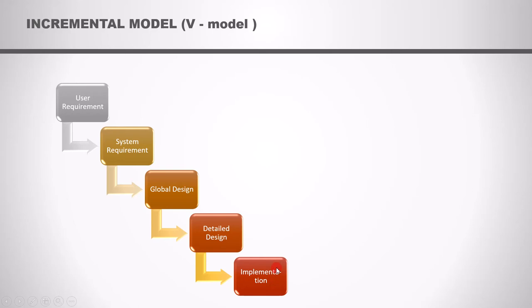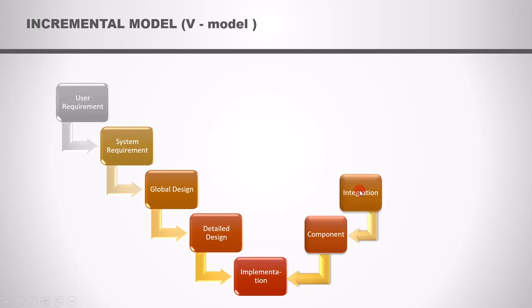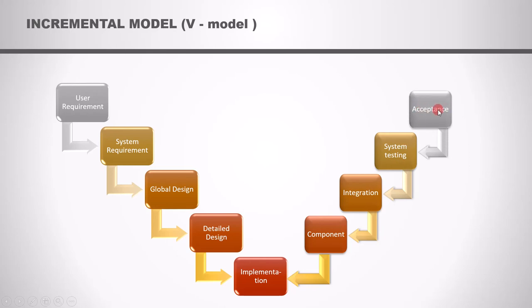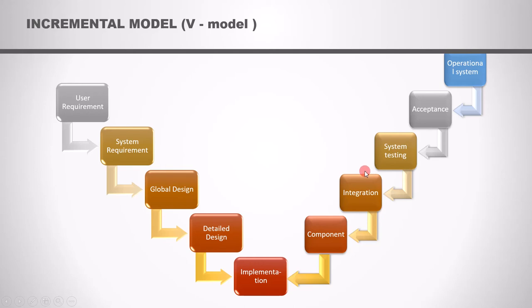Once implementation is over and the software is ready, we perform component testing. Once that is done, we perform integration testing, then system testing, and finally acceptance testing. Once the software passes through all these tests, it is ready for operational use. This development model looks exactly like a V, which is where its name comes from. The advantage is that all testing activities are parallel to the development activities.